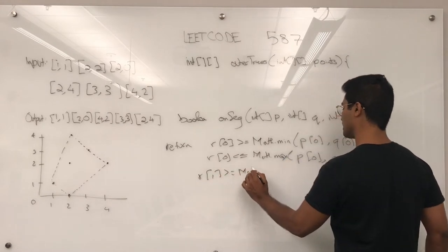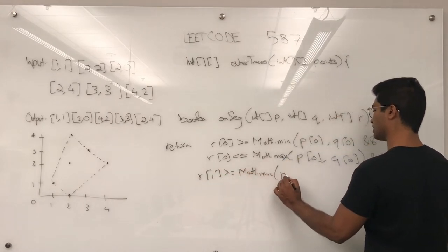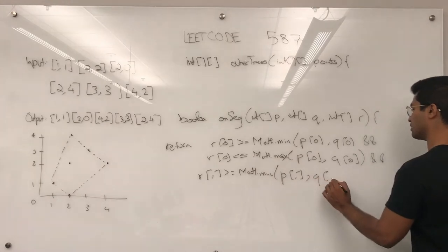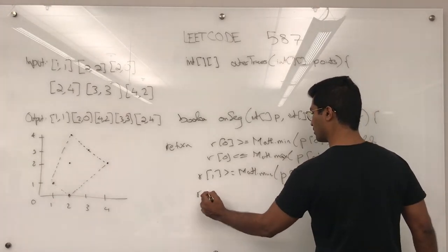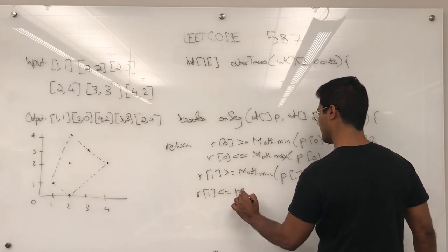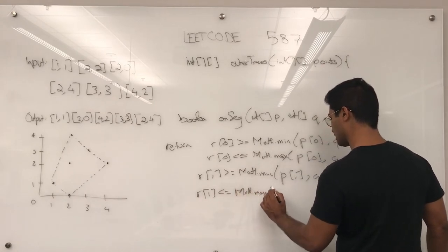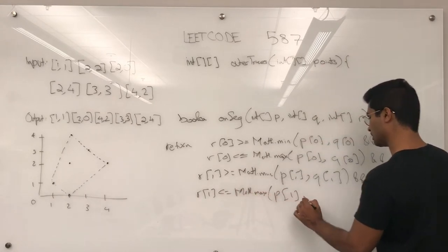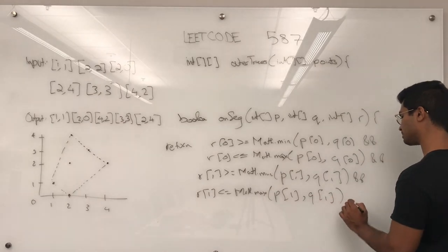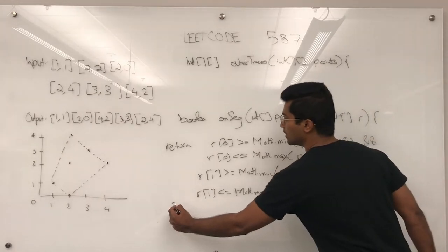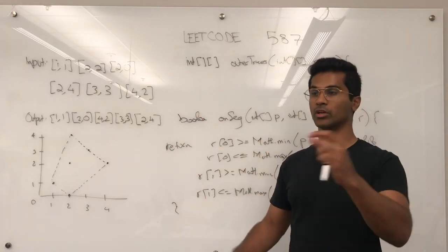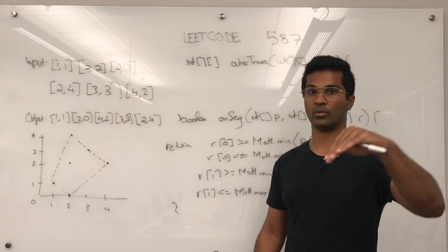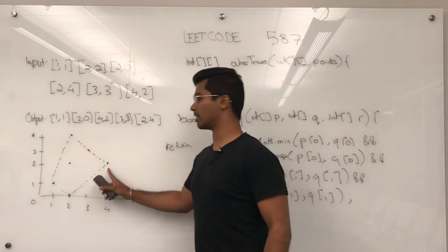R of 1 is greater than or equal to math dot min p of 1, q of 1, and r of 1 is less than or equal to math dot max p of 1, q of 1. If this condition holds true, and the orientation of the three points is 0, then that means those three points align in one line segment like these guys.